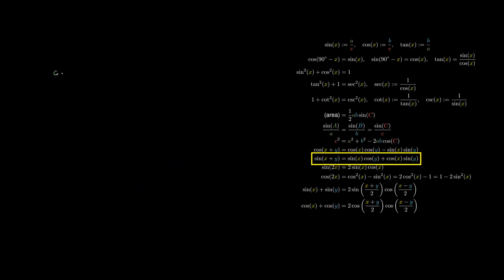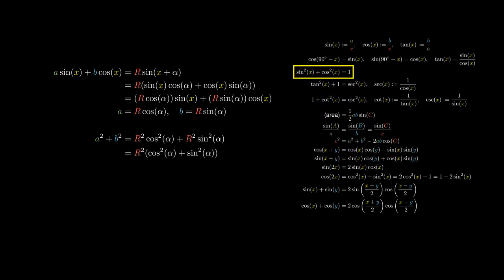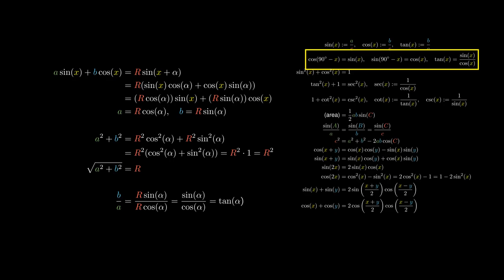Finally, if we have to deal with A times sine X plus B times cosine X, we can write this as a single sine term shifted by alpha and scaled by R. Expanding using the sine addition formula gives us A equaling R cosine alpha and B equaling R sine alpha. Adding A squared and B squared, we obtain R squared cosine squared alpha plus R squared sine squared alpha, and by the Pythagorean identity this equals R squared, so R equals the square root of A squared plus B squared. Taking B divided by A gives us sine alpha over cosine alpha, which is tangent of alpha. A similar formula can be derived in terms of cosine instead of sine.